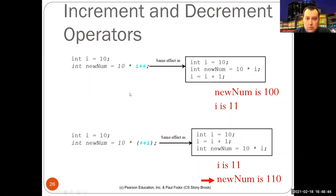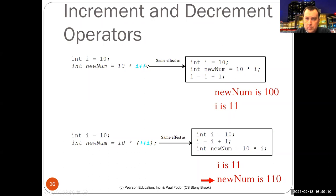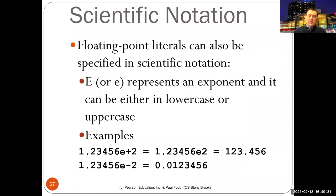The pre-increment first increments i by one, then new number is 10 multiplied by the new value of i. In both cases i ends up as 11, but new number is 100 in the post-increment version and 110 in the pre-increment version.